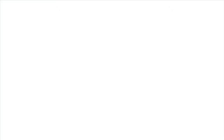This test requires 5 positive and 5 negative surge pulses, with a time interval between successive pulses of 1 minute or less. This photo shows the setup for a surge immunity test. Large isolators are used to protect supporting equipment, such as multimeters and power supplies, from damage during the test.